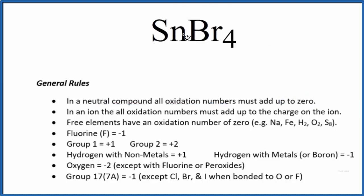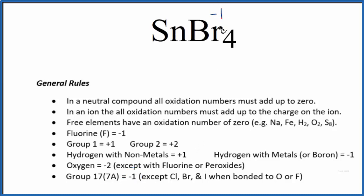If we look at the tin, that's a transition metal — we don't know its oxidation number just looking at it, but we can look at what it's bonded to. We look at bromine, which is in group 17, sometimes called 7A on the periodic table. That has a negative one oxidation number, with just a few exceptions. So each one of these bromines is going to have an oxidation number of negative one.